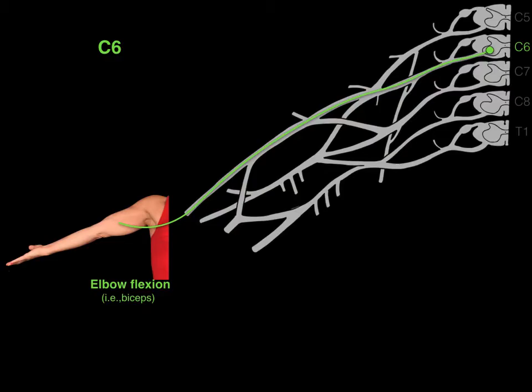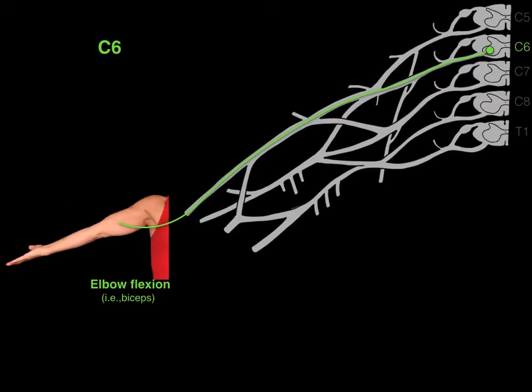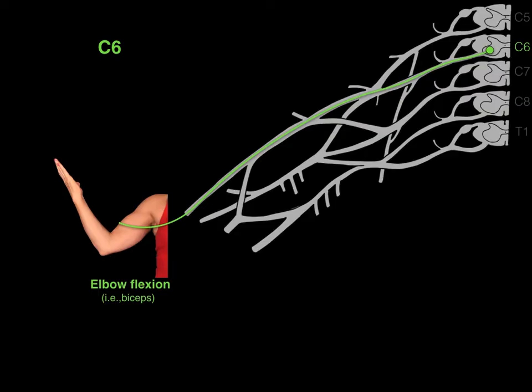The C6 myotome is elbow flexion of the biceps, and the biceps is innervated by the musculocutaneous nerve. The musculocutaneous nerve takes motor neurons from the ventral horn cells of the C6 spinal cord level and transports those motor neurons to the biceps.